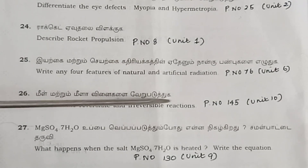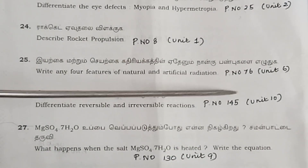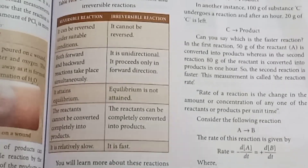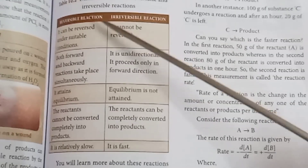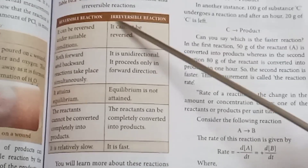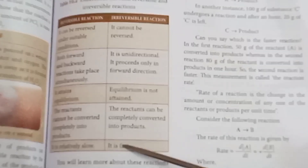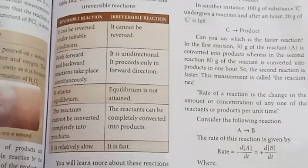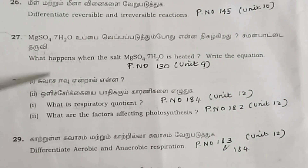Question 26: Differentiate reversible and irreversible reactions. Page number 145, Unit 10. Answer: Reversible reaction vs. irreversible reaction — presented in tabulation format.